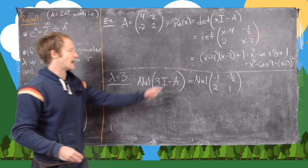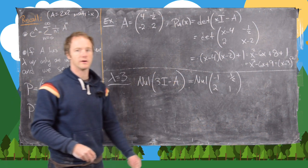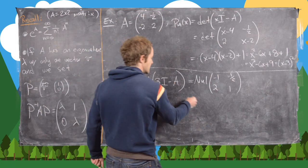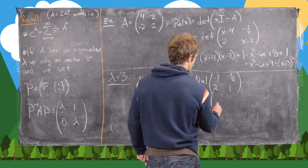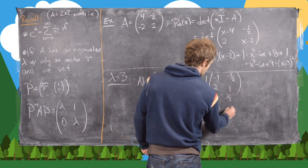So we get that. But now notice we can do a little bit of row reduction here. Notice the second row is a multiple of the first row. So this gives us the null space of [1, 1/2; 0, 0].